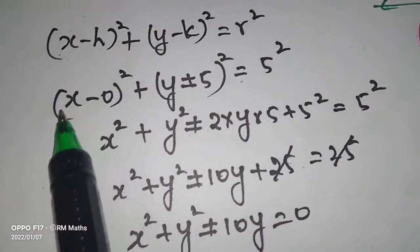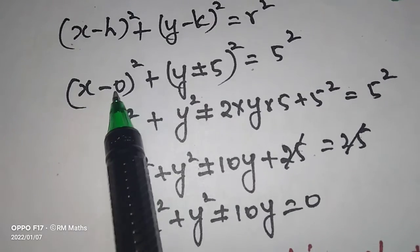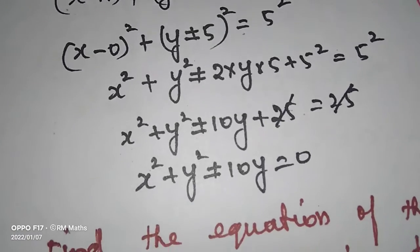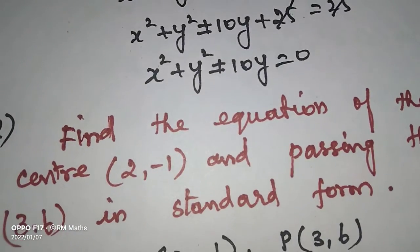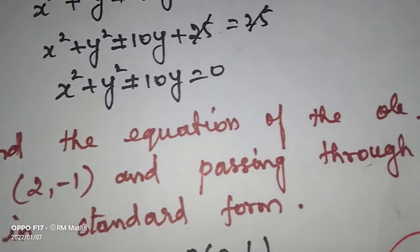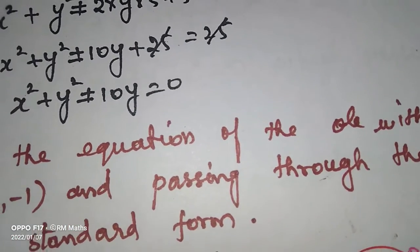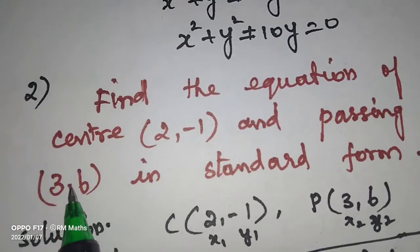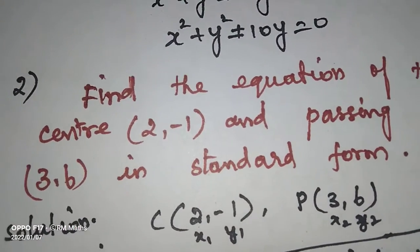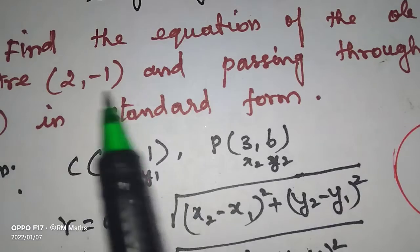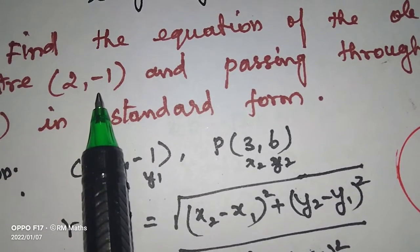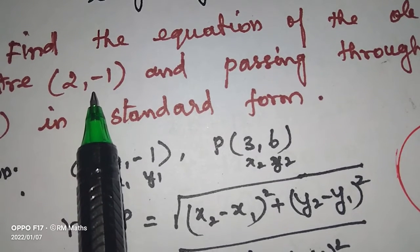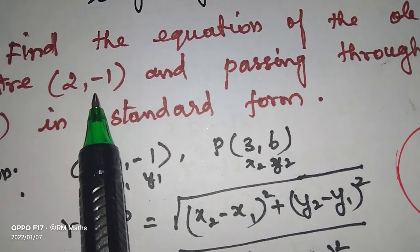If I try to calculate the radius here with my center, we will write the formula: x minus h whole square plus y minus k whole square equal to r square.